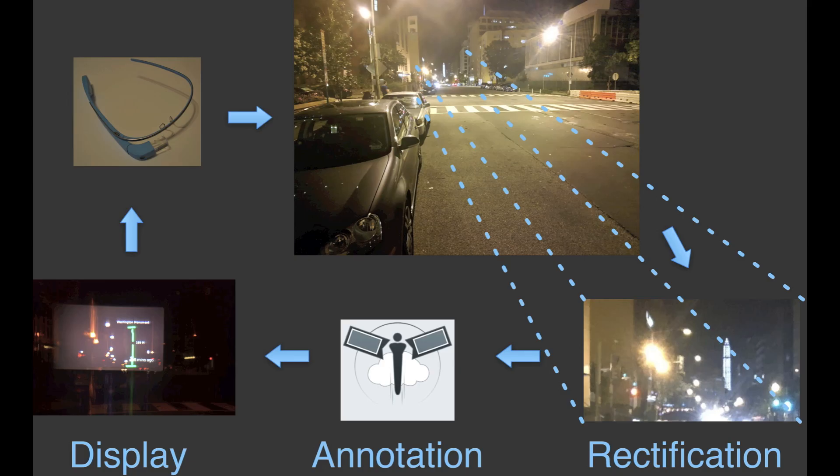By providing the rectified view to an annotator, we can then visually answer the question: how tall is the Washington Monument? This diagram shows the steps required to obtain this result.